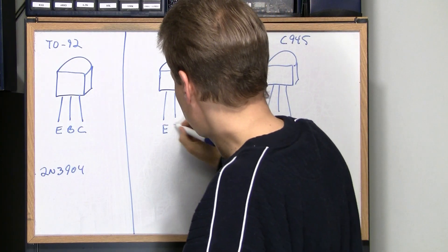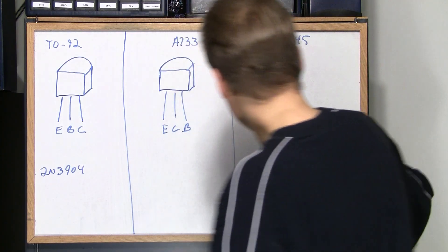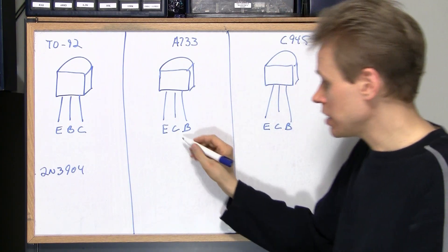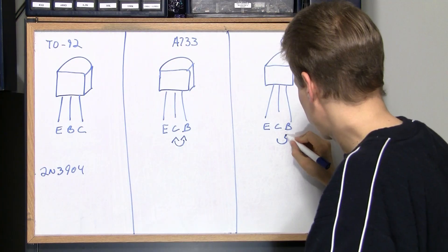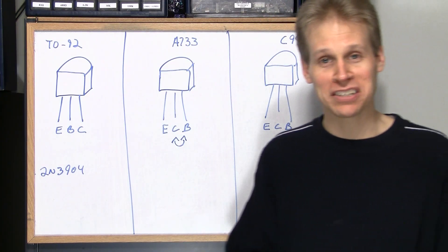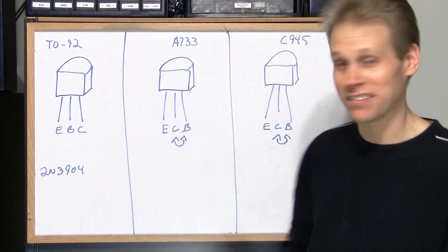So the basing for this is emitter, collector, base and the same thing for this one. All they've done is they've reversed these two from the 2N series just to frustrate you and make troubleshooting just a little bit more difficult once you get used to this.